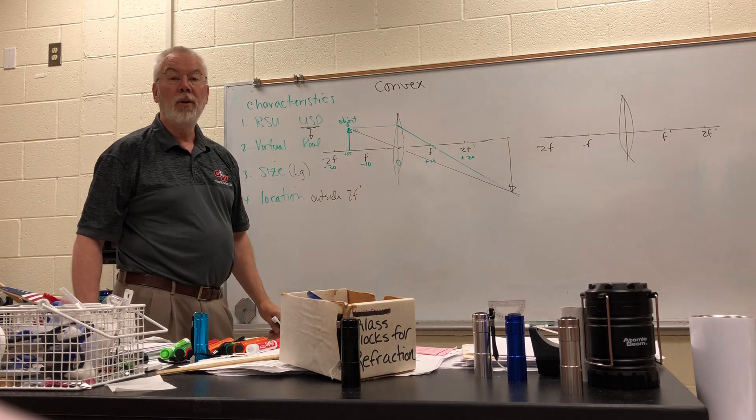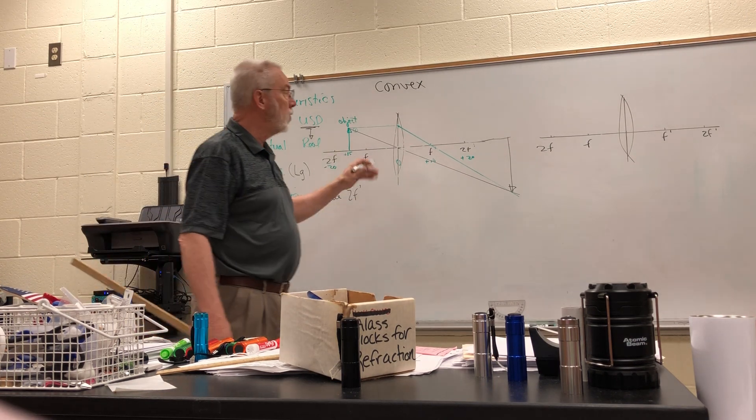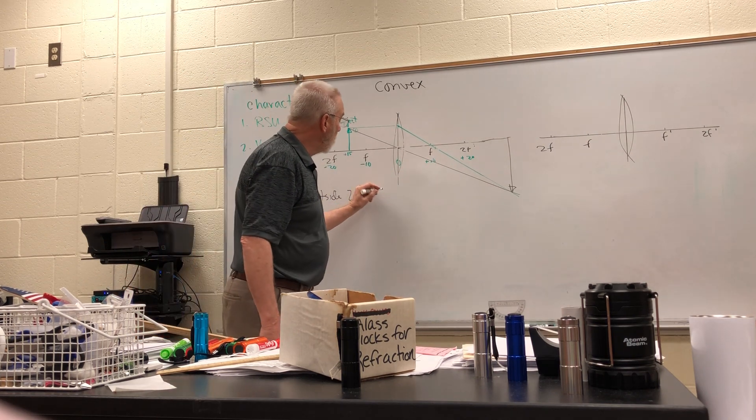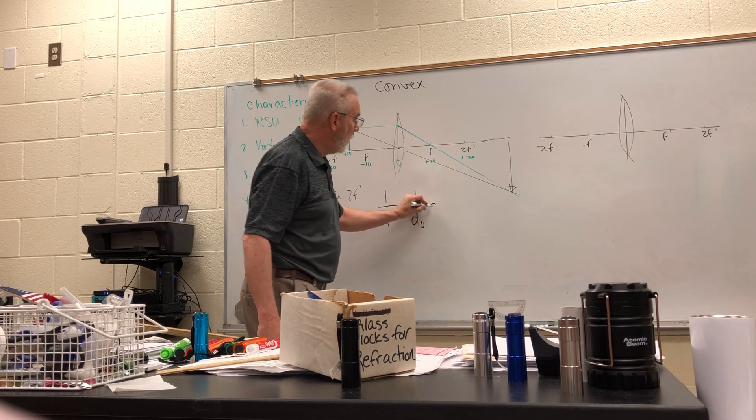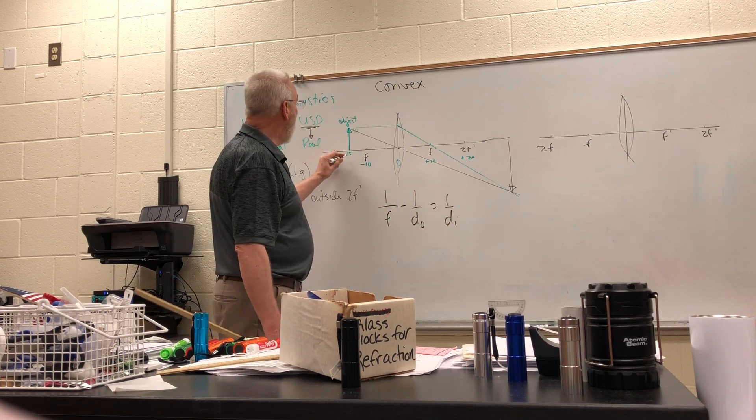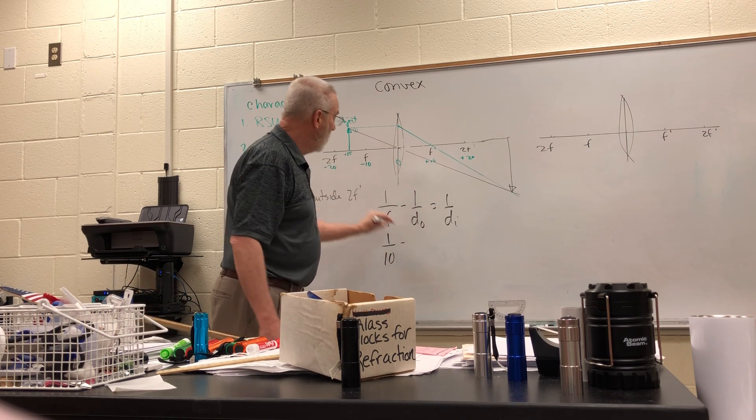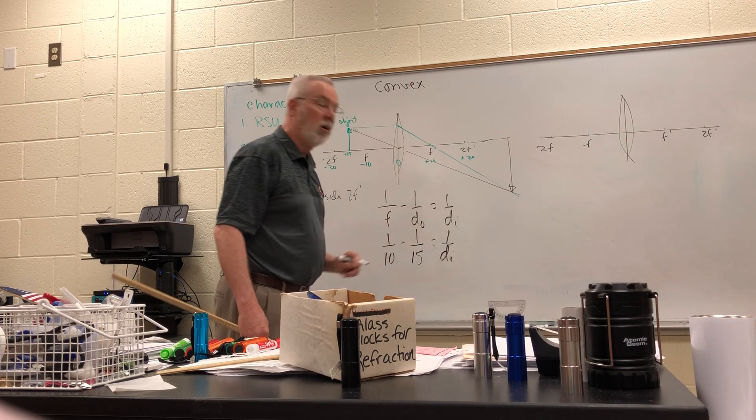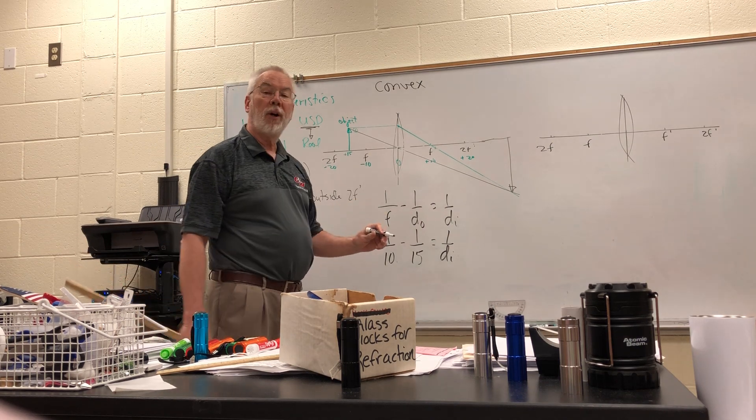Now, once we do the math, then we can establish the specific location in terms of centimeters away from the lens. The formula looks like this: 1 over f minus 1 over do equals 1 over di. And like the mirrors, I've got the focal length at 10. So 1 over 10 minus 1 over 15 equals 1 over di.